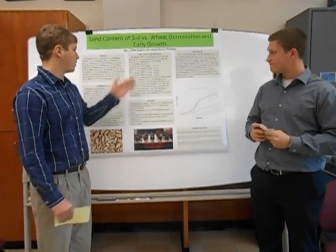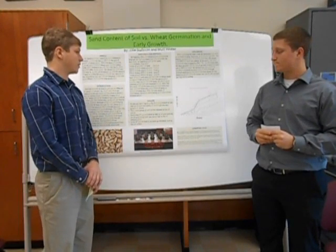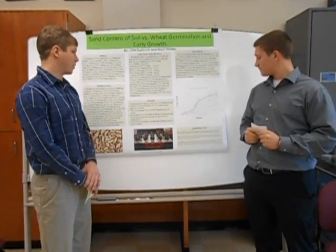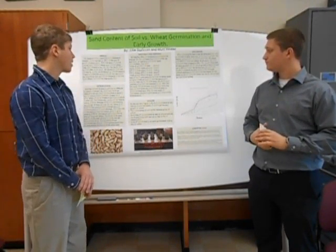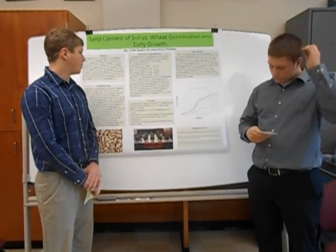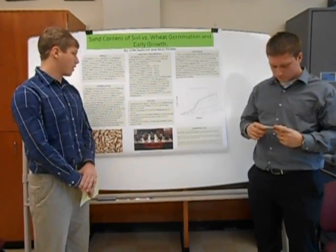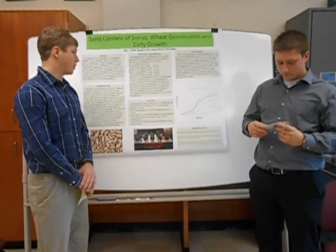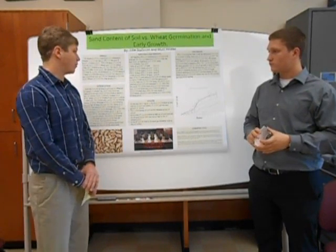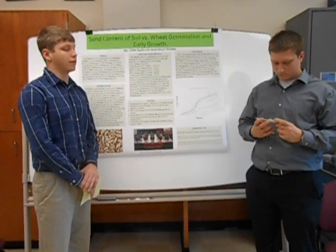Our control had 750 milliliters of peat soil and zero milliliters of sand. Level one had 650 milliliters of peat soil and 100 milliliters of sand. Level two had 550 milliliters of peat soil and 200 milliliters of sand. Level three had 450 milliliters of peat soil and 300 milliliters of sand. Level four had 350 milliliters of peat and 400 milliliters of sand.